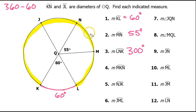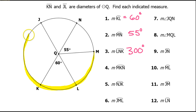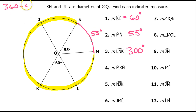What about arc MKN? Here comes another major arc. MKN would go like this: starts at M, passes through K, and goes to N. This is very similar to the previous problem — again, almost a whole circle. The only piece missing is this piece, which is 55 degrees. So I'm going to do 360 minus 55, and that gives me arc MKN — 305 degrees.